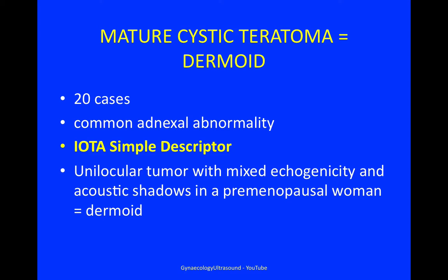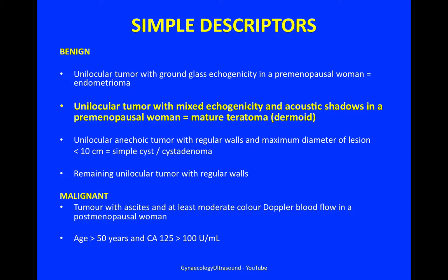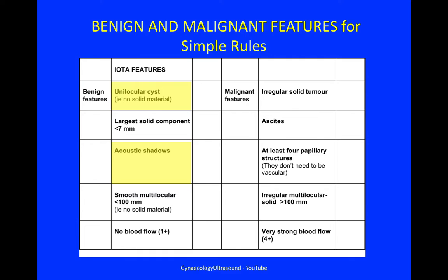A dermoid is known as a unilocular tumour with mixed echogenicity and acoustic shadowing. When it's in a premenopausal woman, this is one of the simple descriptors. The other simple descriptors are seen here and divide into benign and malignant categories. You can pause the video and have a look at them individually. There are also benign and malignant features for simple rules, and you will see that the dermoid cyst has two typically benign features.